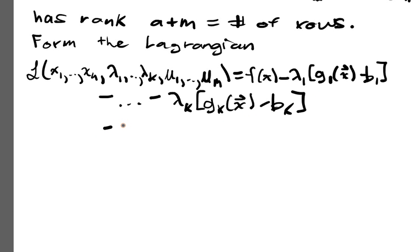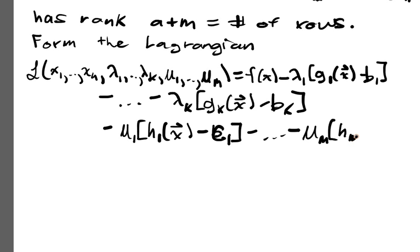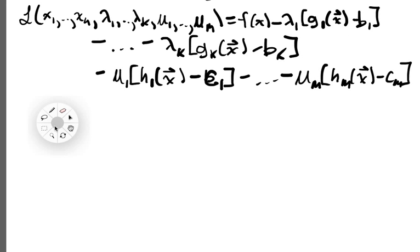Minus mu 1, H1 of X minus C1, minus mu m, Hm of X minus Cm. So that's your Lagrangian, it could be a very long winded object.